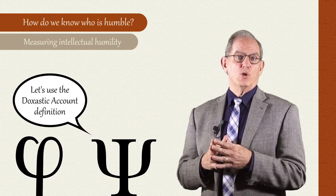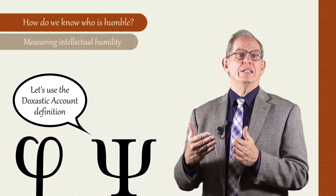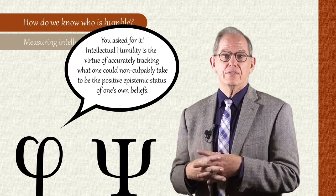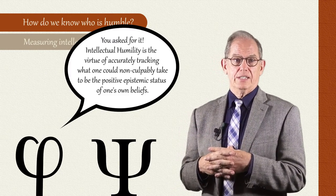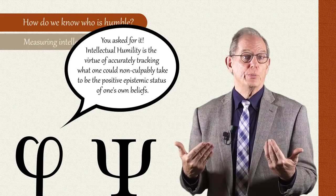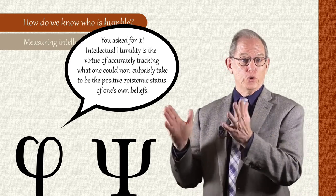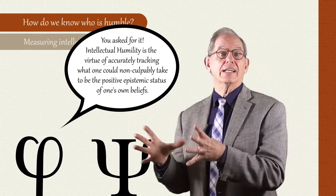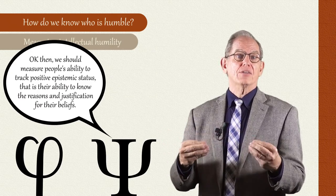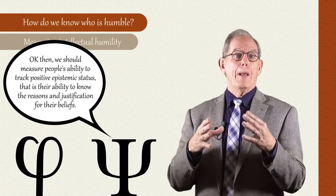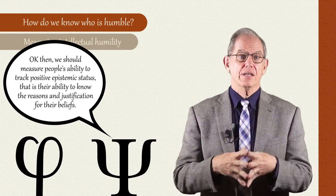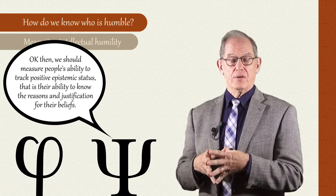Items or procedures for the measure are generated on the basis of a theory of the construct. In the case of intellectual humility, if you hold a doxaxic account, items or procedures that measure the accuracy of tracking positive epistemic status would be the focus.